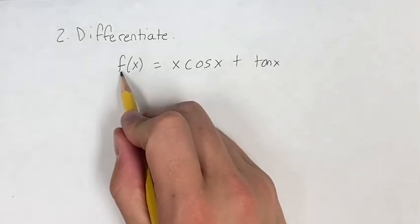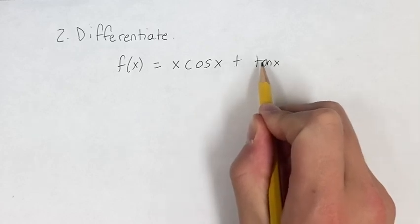In this problem, we're differentiating the function f of x is equal to x times cosine x plus tangent x.